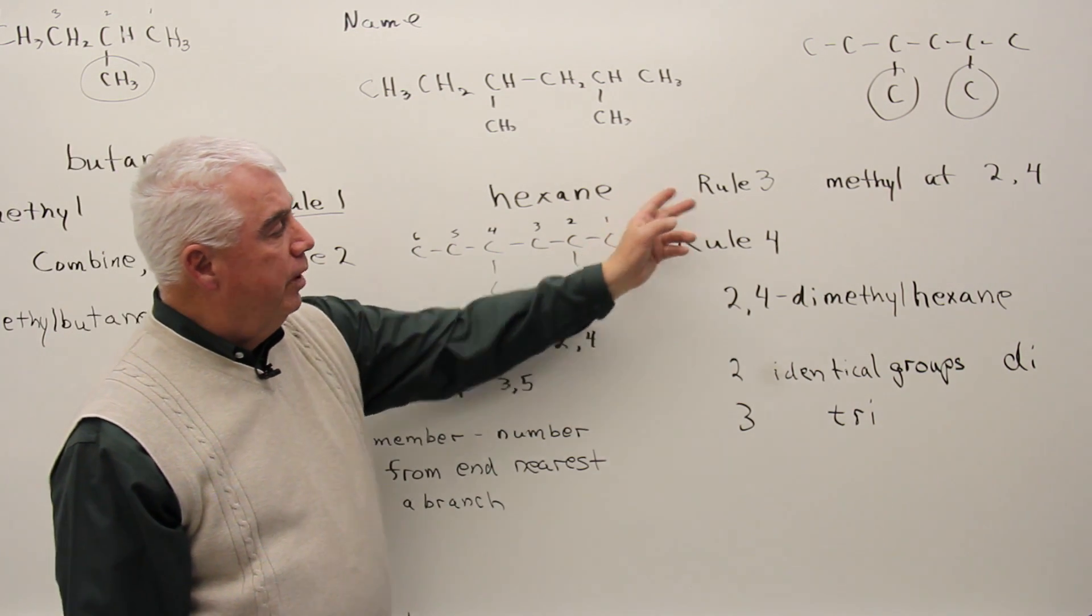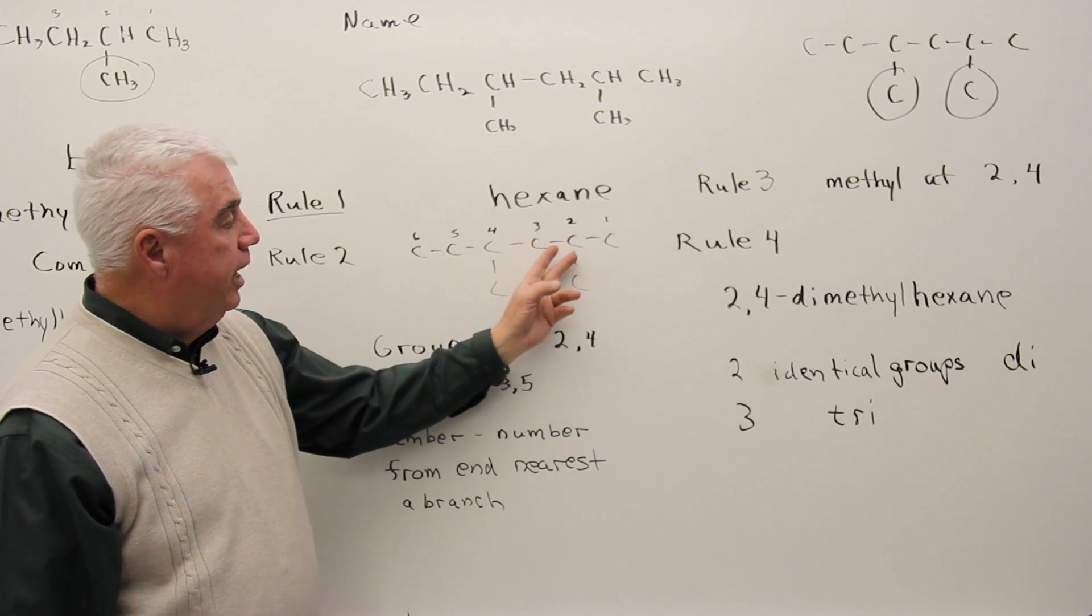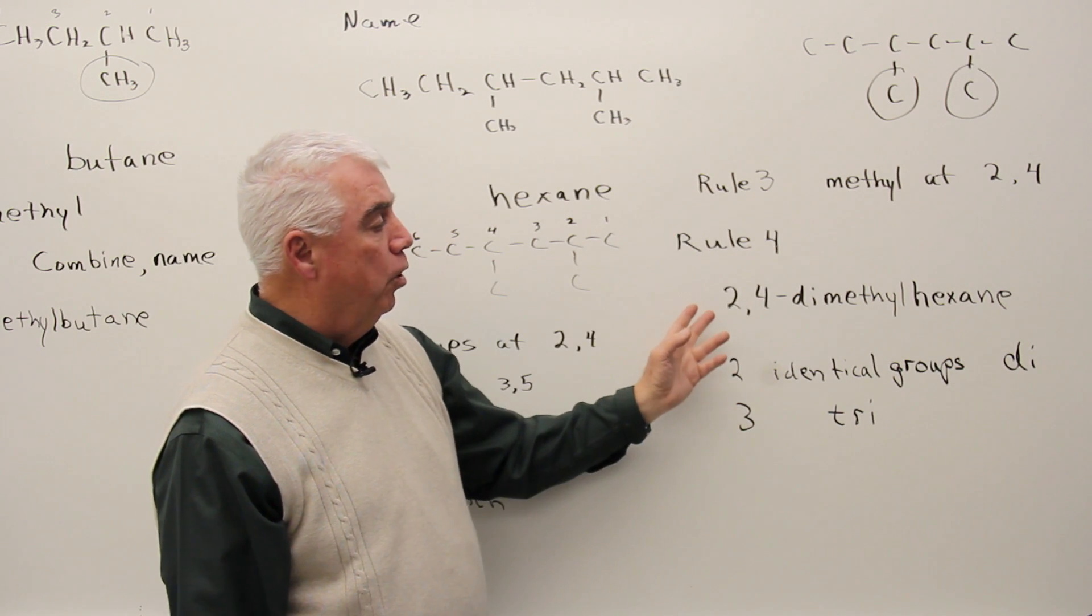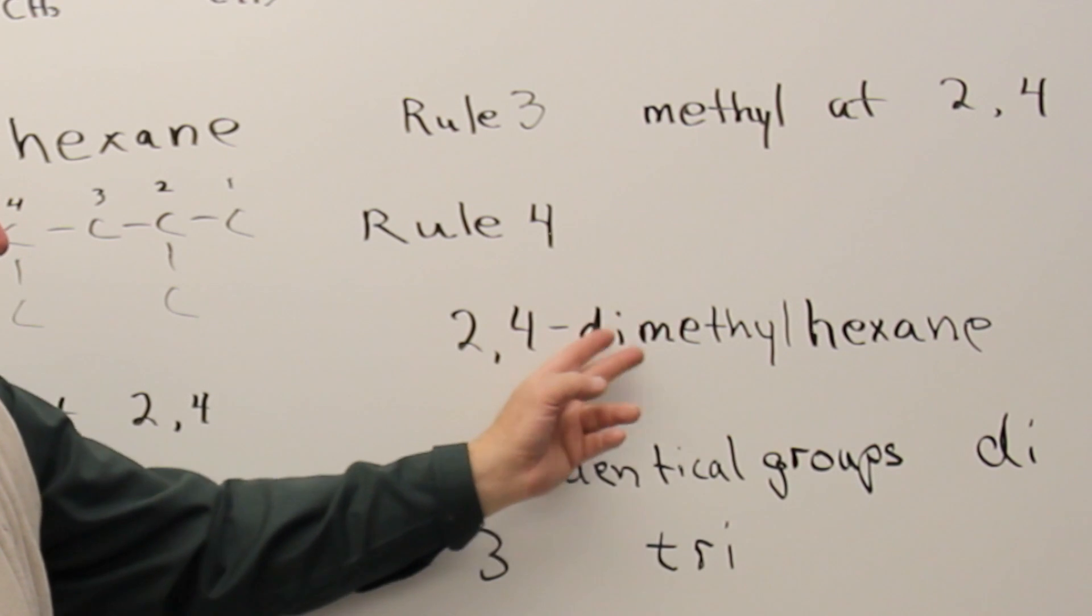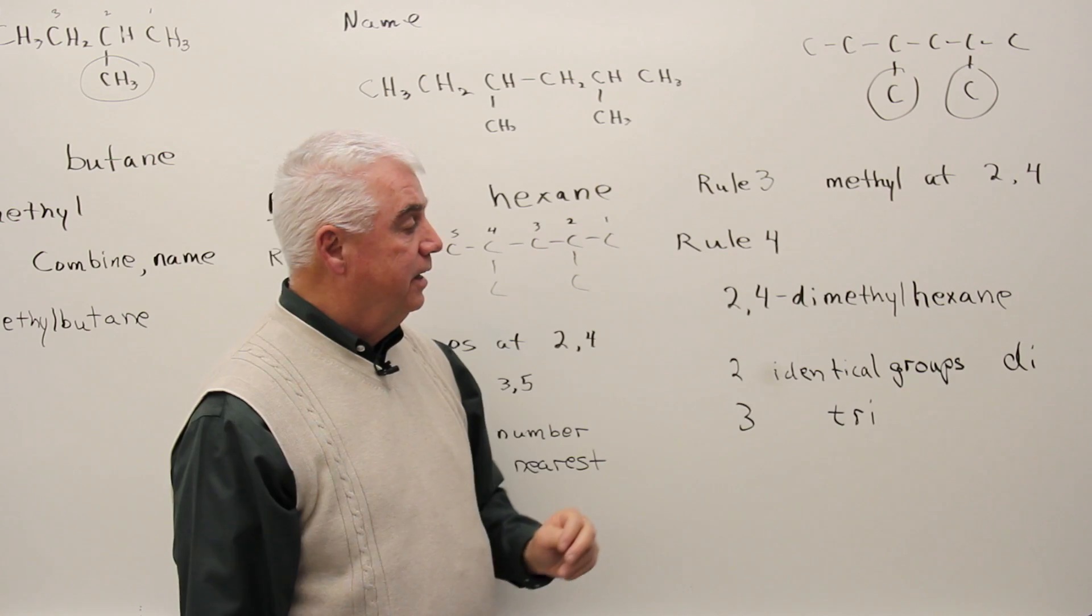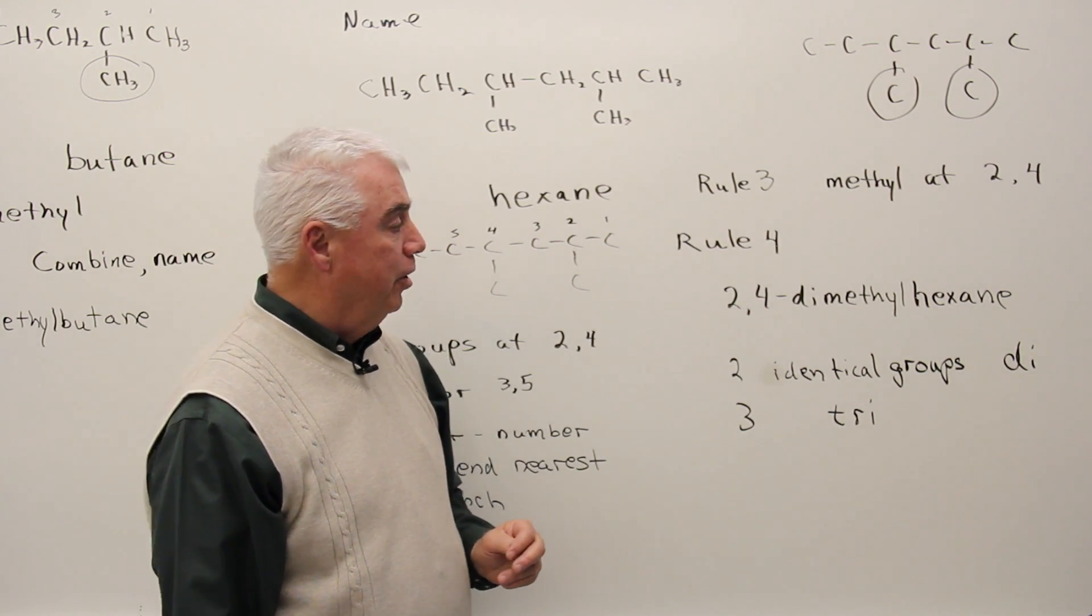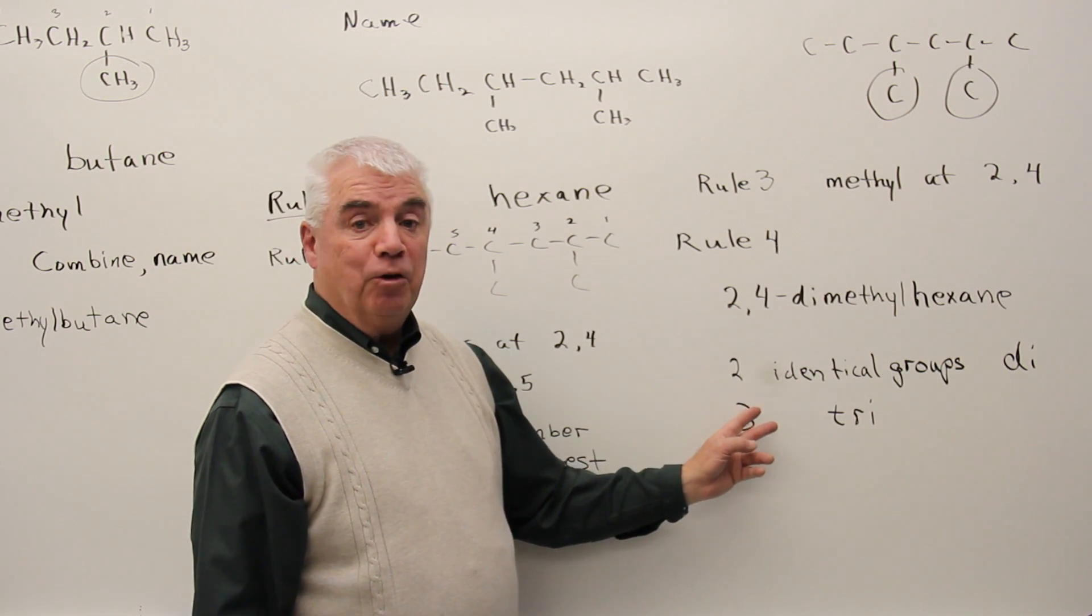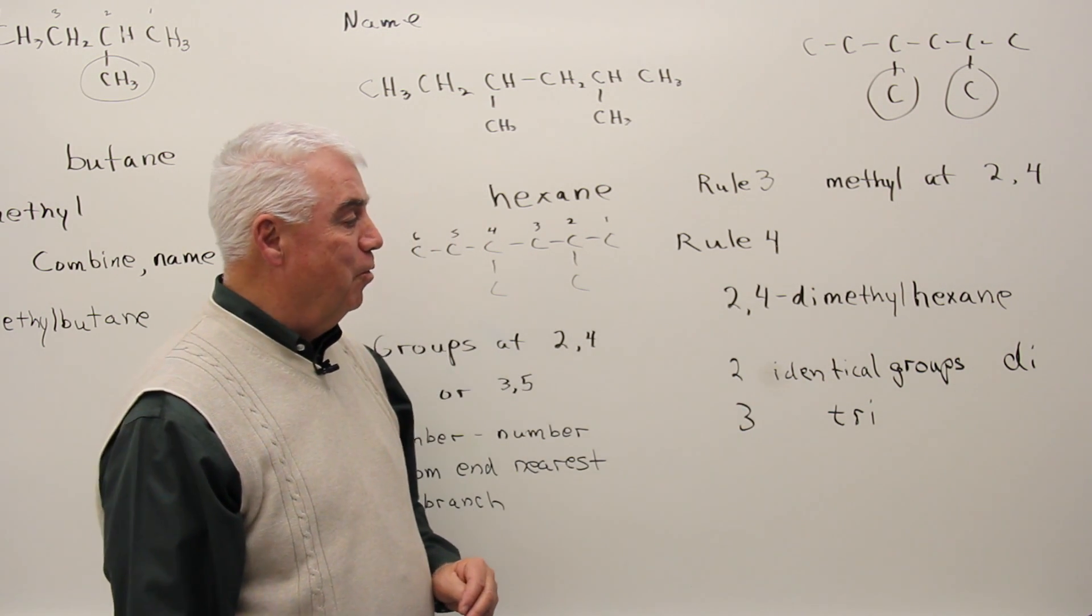Then rule number three, we've identified the two groups now as methyls. We've located their positions at two and four. Rule number four, we're going to combine it all into one name. Hexane is the base word. We've got two methyl groups. And when the groups are identical, we use a prefix di. And we've located their positions. We've put a hyphen between the number and a letter. 2,4-dimethylhexane. If we had three identical groups, we'd use the prefix tri. If we had four, tetra, and so on.